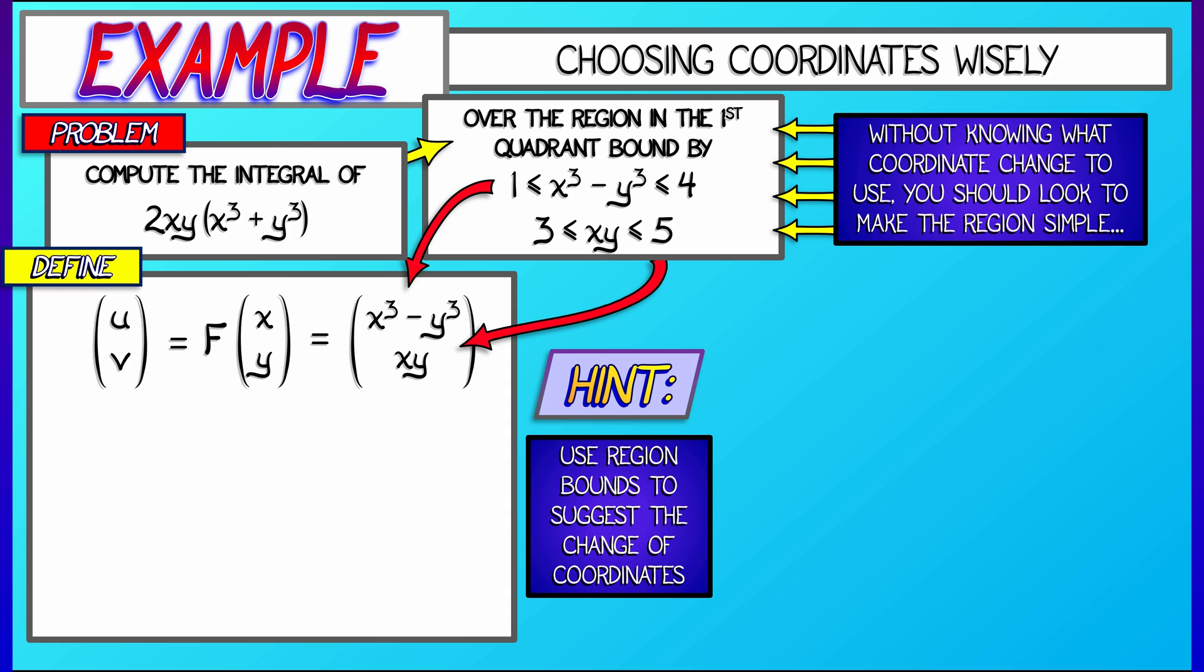So what do we do? Well, now what we have to do is start filling in the details for the change of variables theorem. So I know that du dv is the determinant of the derivative in absolute value times dx dy. So let's start computing some partial derivatives and get this going.